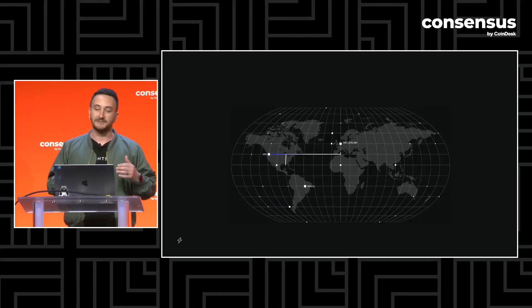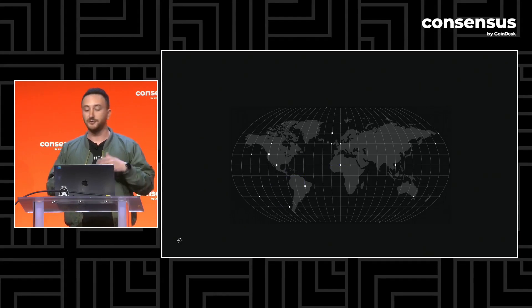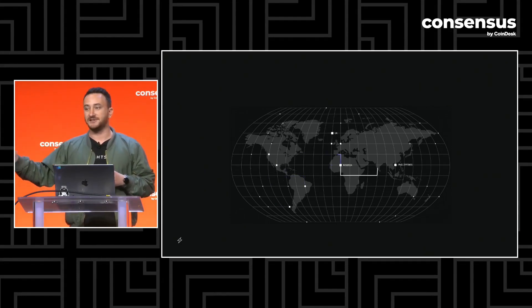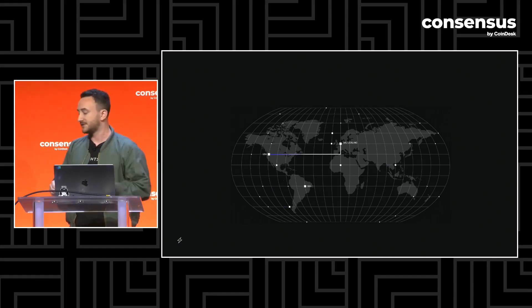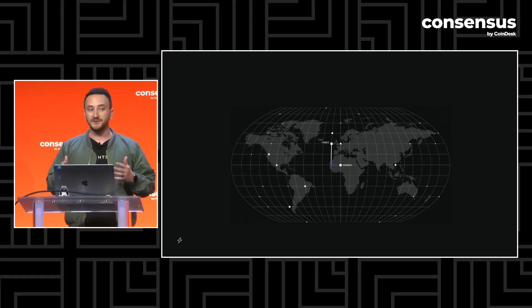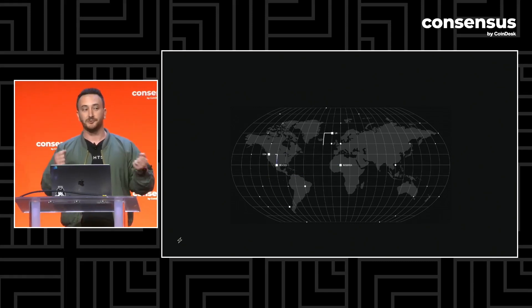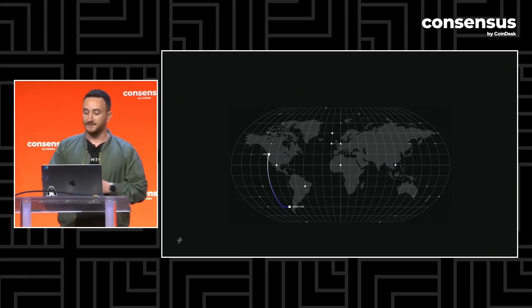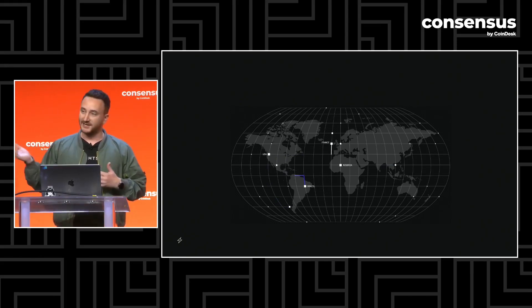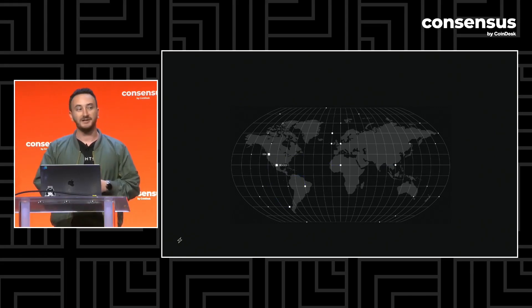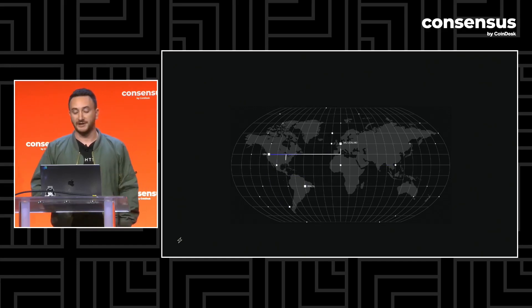What we've been seeing around the world is that there have been some pretty good real-time rails popping up, but only domestically in certain regions. If you think about RTP or FedNow in the US, or PIX or UPI — but as soon as you leave those regions, you're stuck with old rails again that have all the problems Kevin just described. So we view Lightning as a way to bridge all of these new real-time payment systems. UMA is 24/7 on, super cheap compared to traditional remittances, and truly global between any currency.